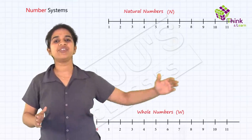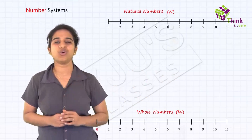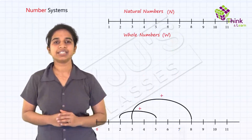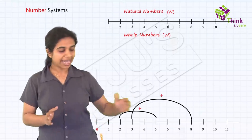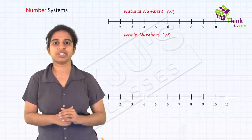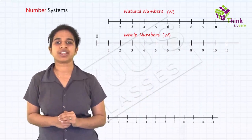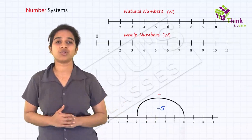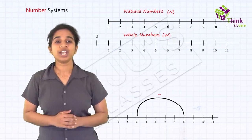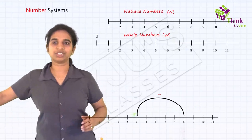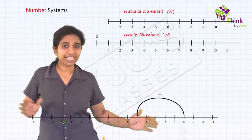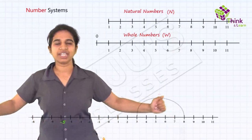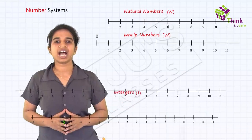Let's see what numbers we get by adding two whole numbers. Two plus five gives seven, which is also a whole number. Three plus eight gives eleven, also a whole number. So adding whole numbers still gives us whole numbers. But what happens if we subtract — say three minus eight? That gives minus five. Minus five is not part of our set of whole numbers. So to represent minus five, we add another set of numbers to the left of zero: the negatives of the natural numbers. This entire set is called integers, represented by I.